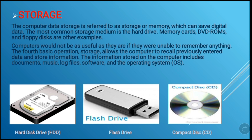Here we have pictures showing the types of storage devices. We have the hard disk drive, also known as the HDD — this is where the computer stores the operating system and it is the primary storage device on the computer system. We also have the flash drive, which is an external storage device that can be plugged and unplugged from the computer system. We also have the compact disc — the CD is also an external storage device.